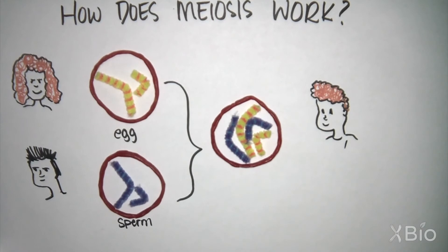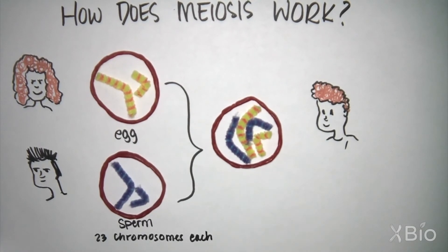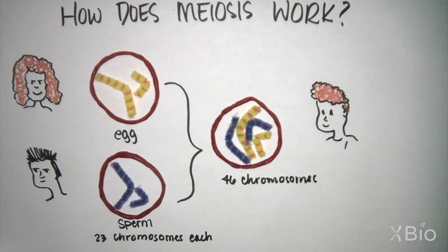Thus, when the gametes, the sperm and the egg, fuse together, we restore the normal number of chromosomes for the next generation.